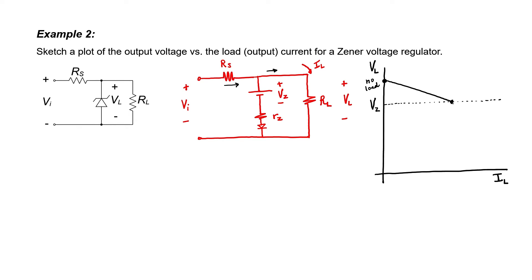We're back to the situation of a voltage divider. Down here, we're at the short circuit condition — the load resistor equals zero, the current is maximized, but the voltage is zero. The graph has two regions of interest: up here the Zener diode is on, and down here the Zener diode is off. The slope of the curve where the Zener diode is on is related to the series resistance of the Zener diode. The slope in the off region is related to the voltage divider set up by R sub S and R sub L.